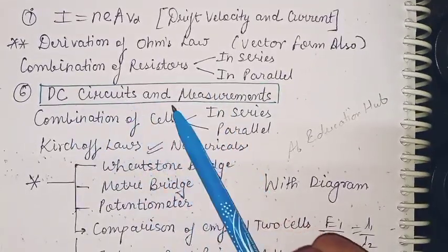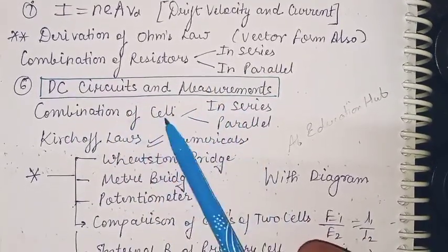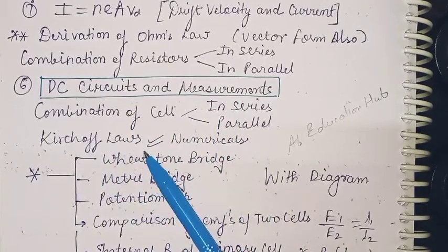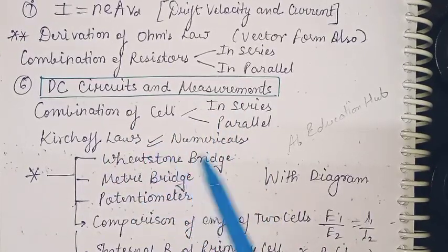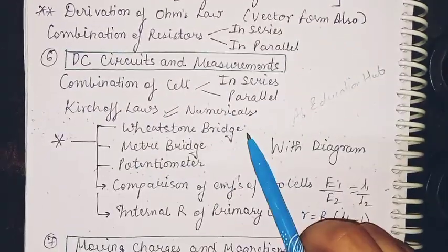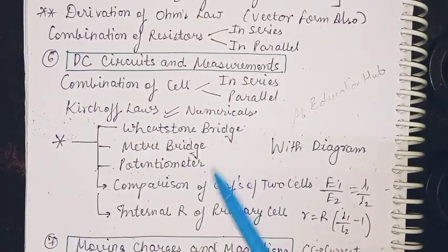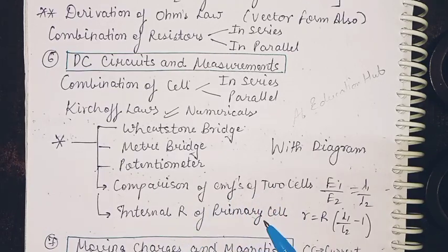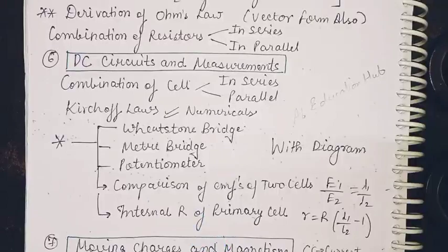Now DC circuits and measurements: combination of cells in series and parallel. Kirchhoff's law - you must do it because you can expect numericals from here. Next is Wheatstone bridge, meter bridge, potentiometer, comparison of EMFs of two cells, then internal resistance of primary cell. Any derivation may come, and you have to make a diagram also.